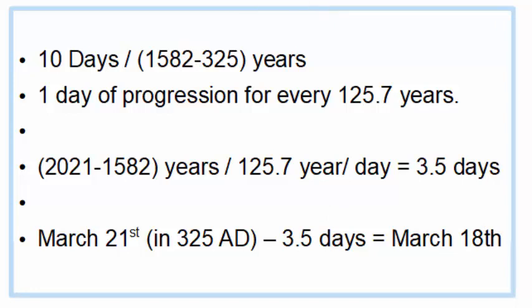Why are they telling us the equinox is on March the 20th when there are so many videos and channels out there proving that the equinox has fallen earlier? I believe it's because they're still worried about those riots in the streets.